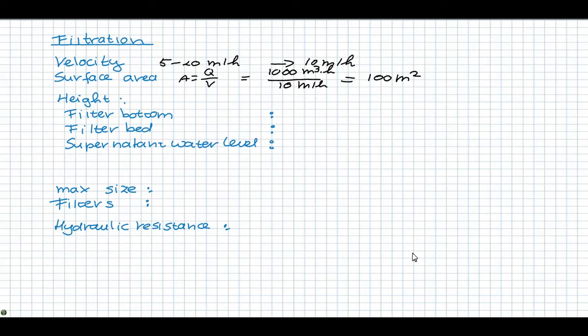The height of the filter is the sum of the filter bottom, including the support layer, the filter bed, and the supernatant water level. These are typically 1 meter for the filter bottom, 1.5 meter for the filter bed, and 1 meter for the supernatant water level. Together this makes a filter height of 3.5 meter.